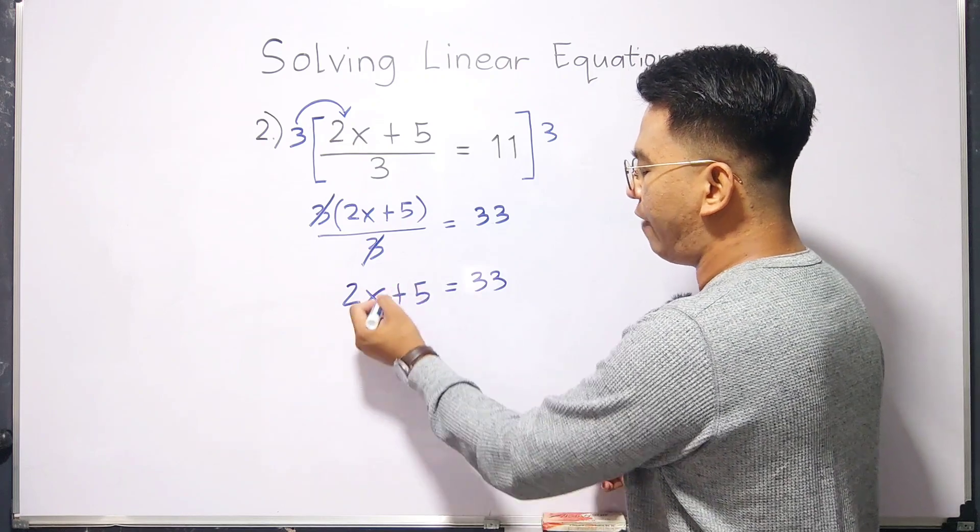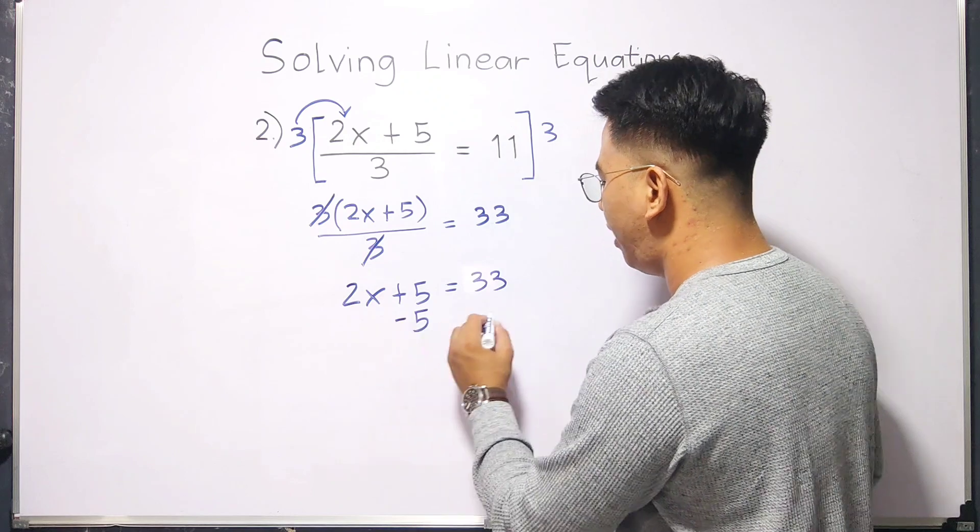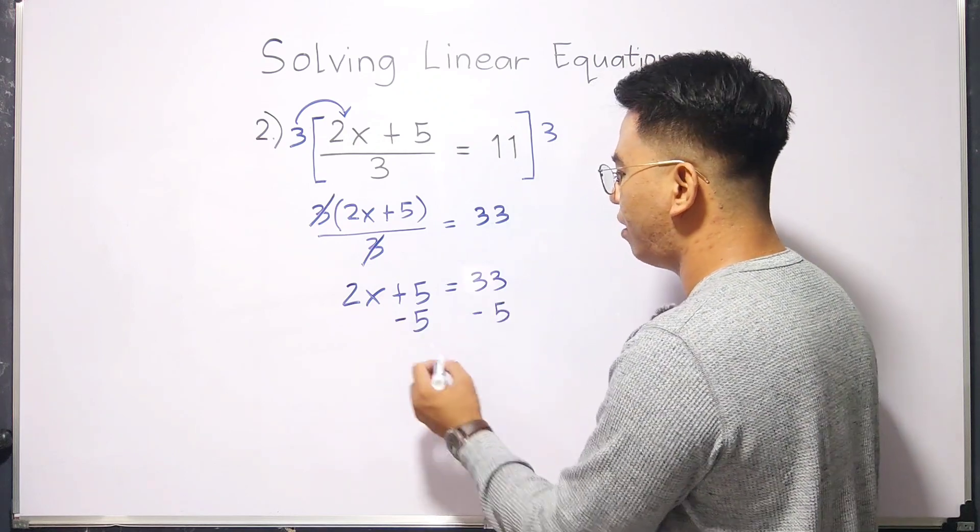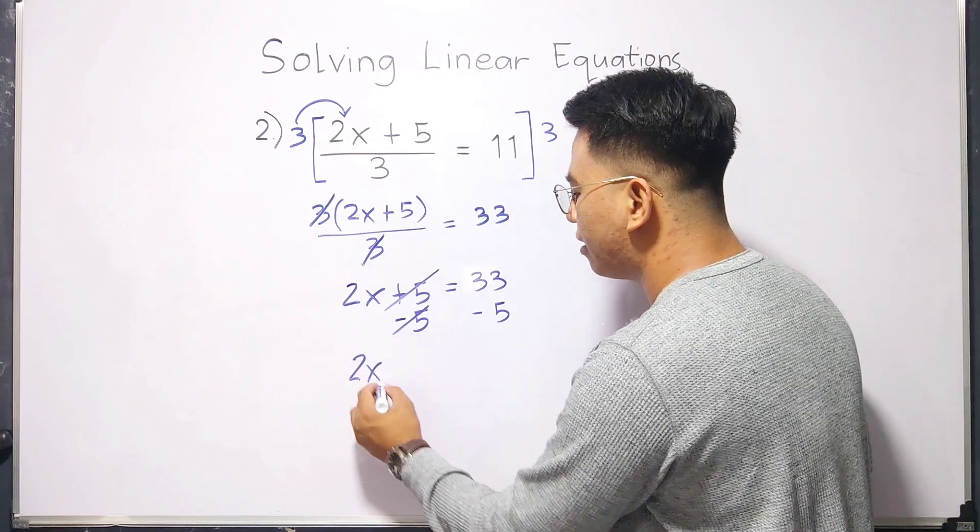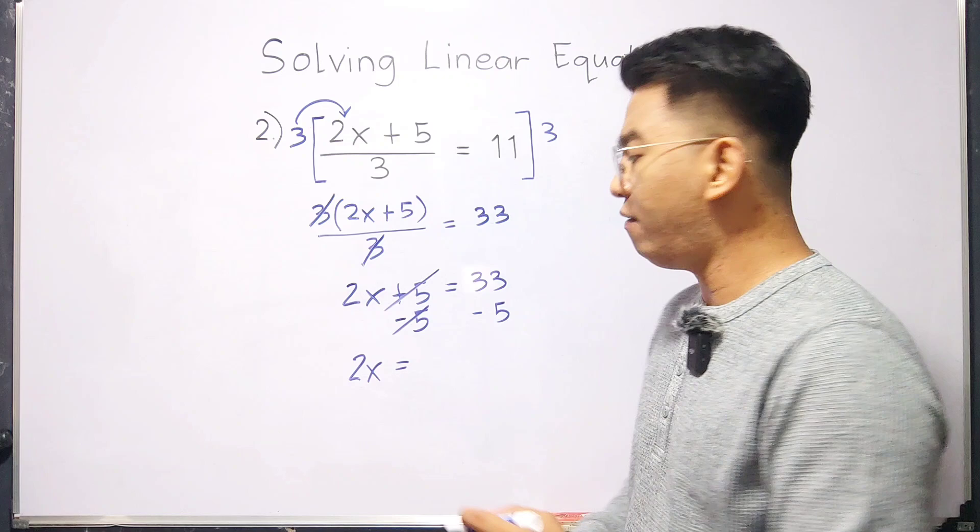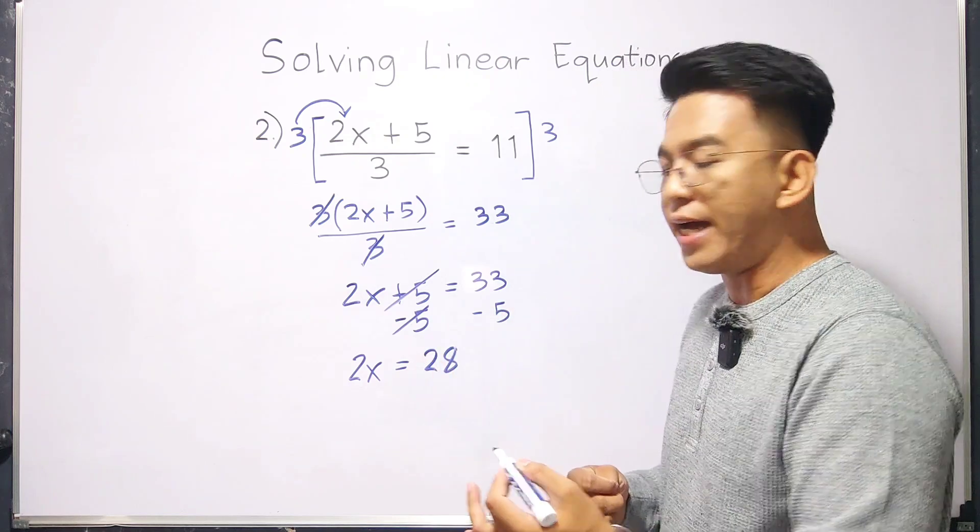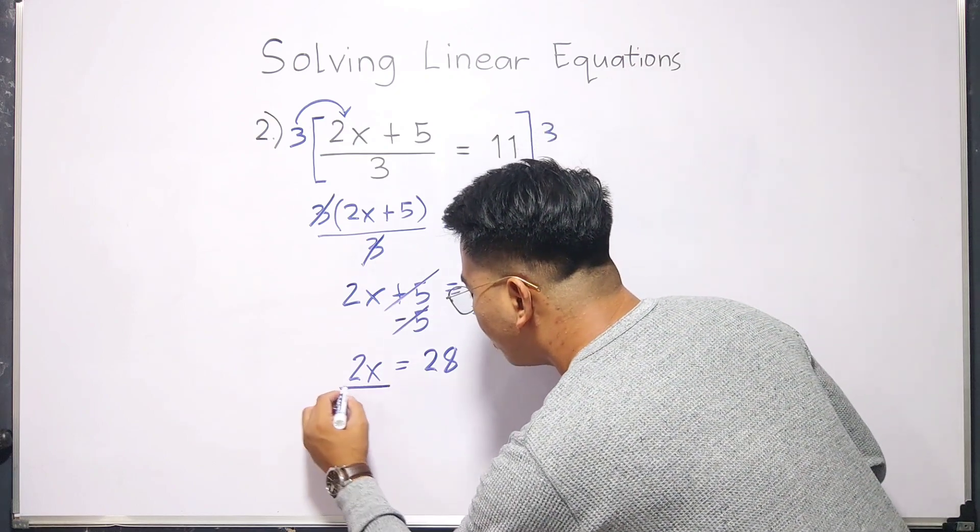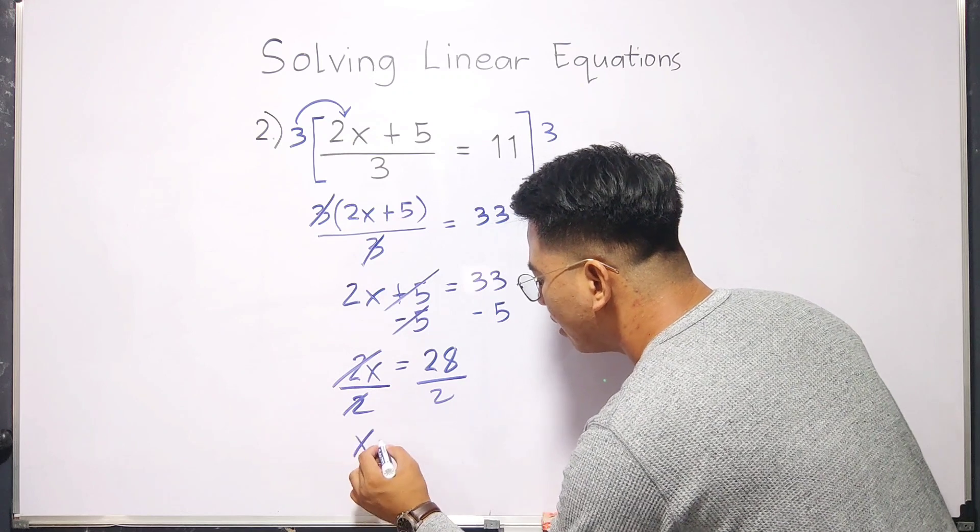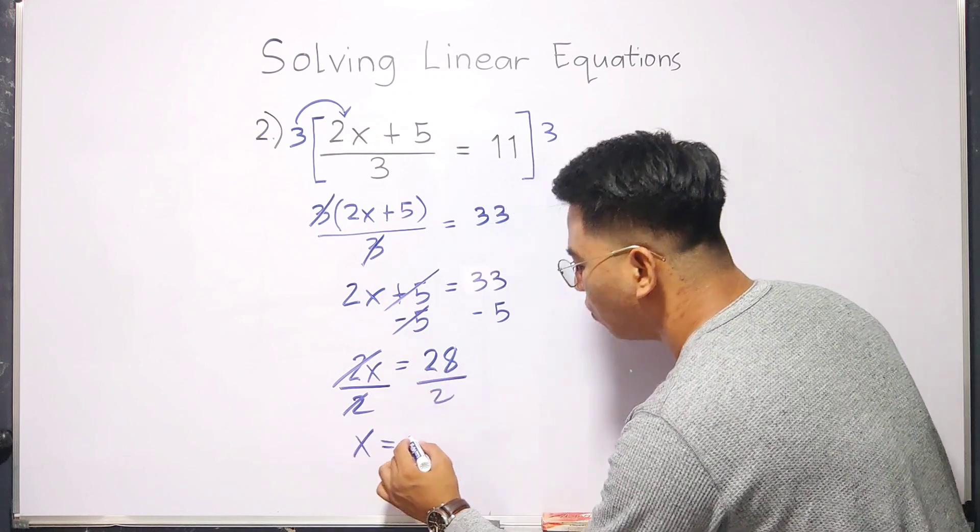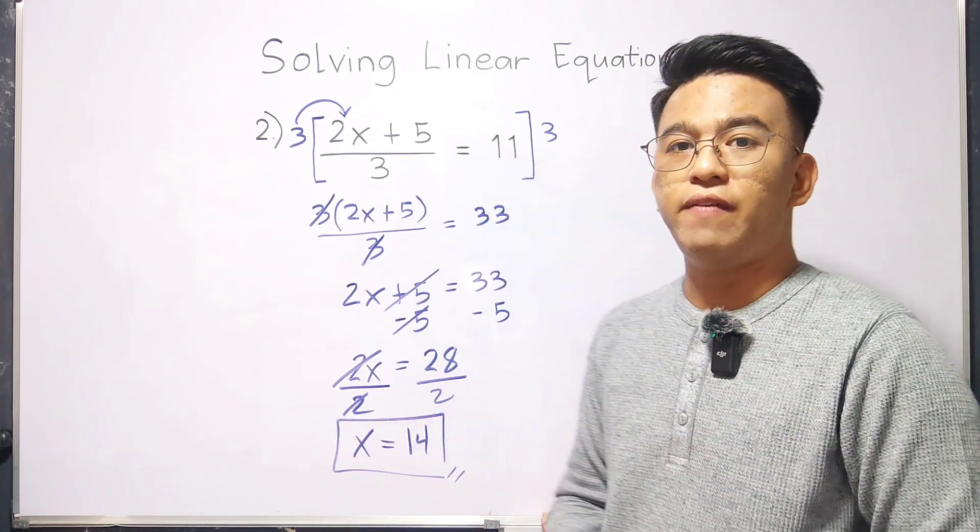So, what's next? We will remove 5 by subtracting both sides of the equation by 5. You have 2x is equal to 33 minus 5 is equal to 28. And to solve for x, you have to divide it by 2. Your x is equal to 28 divided by 2, which is equal to 14. And this is now the value of x.